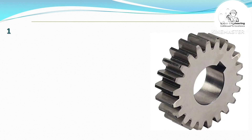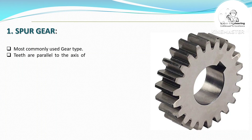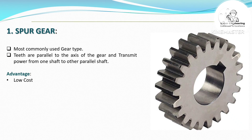Spur Gear — the most commonly used gear type. Teeth are parallel to the axis of the gear and transmit power from one shaft to other parallel shafts.